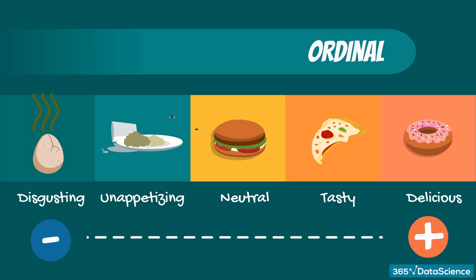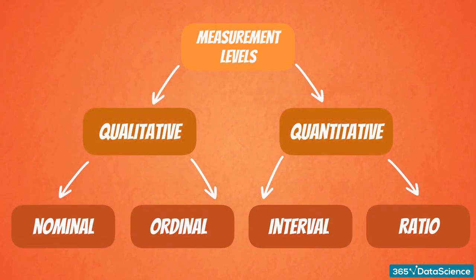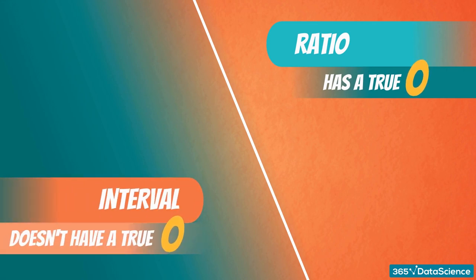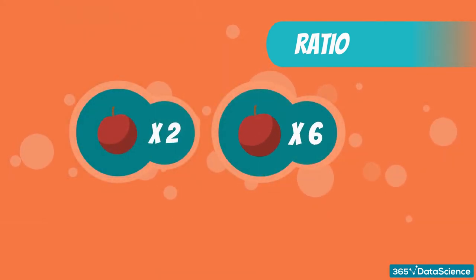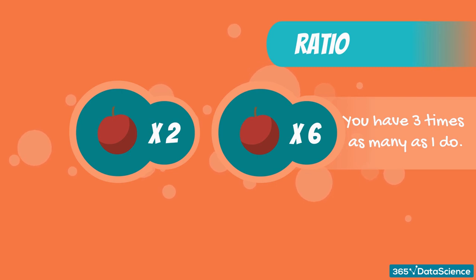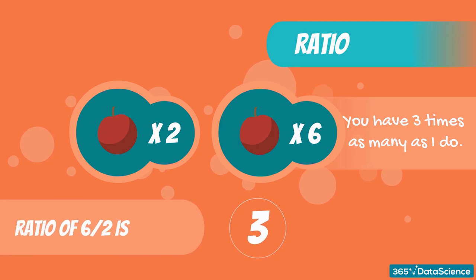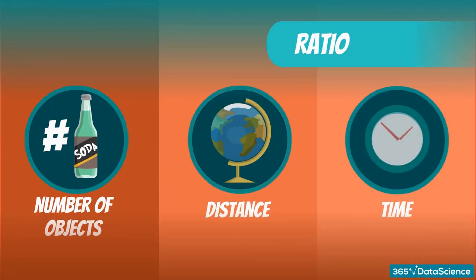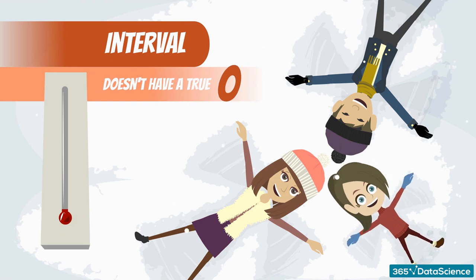What about quantitative variables? Well, they are also split into two groups: interval and ratio. Intervals and ratios are both represented by numbers but have one major difference — ratios have a true zero, and intervals don't. Most things we observe in the real world are ratios. Their name comes from the fact that they can represent ratios of things. For instance, if I have two apples and you have six apples, you would have three times as many as I do. Other examples are number of objects in general, distance, and time.